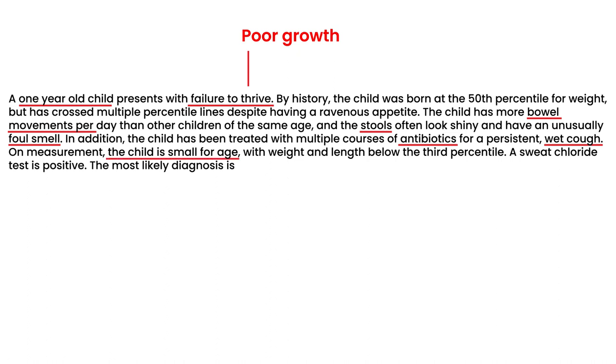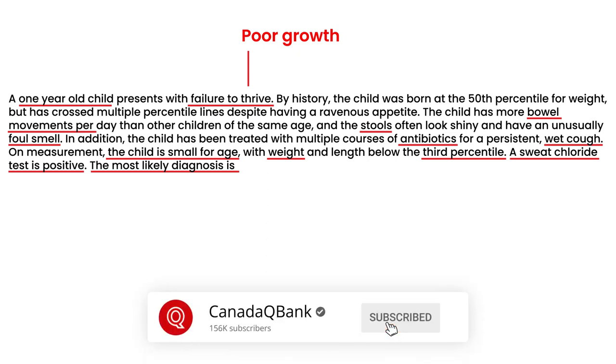On measurement, the child is small for age with weight and length below the third percentile. So that's definitely the poor weight gain that we discussed. A sweat chloride test is positive. That's a big one right there. Most likely diagnosis is. And, of course, they'd give you five choices, and one of them is probably cystic fibrosis. That's a very straightforward cystic fibrosis question. And that's a presentation about cystic fibrosis.